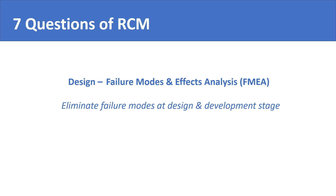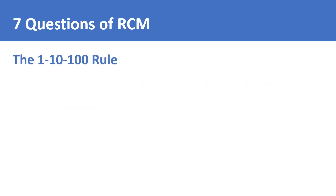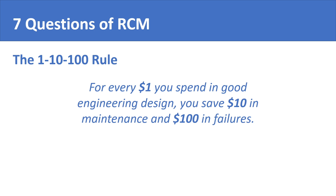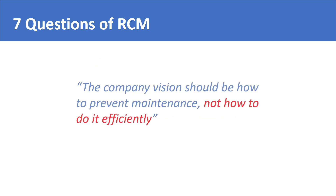This is inspired by what is known as the 1-10-100 rule. The rule says: for every $1 you spend in good engineering design, you save $10 in maintenance and $100 in failures. Or, like a wise man from Ford Motor Company once said, the company vision should be how to prevent maintenance, not how to do it efficiently.